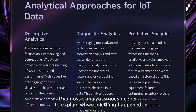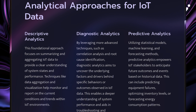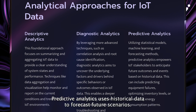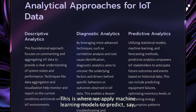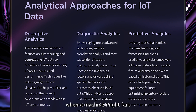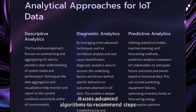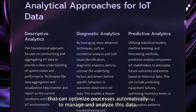Diagnostic analytics goes deeper to explain why something happened. Through techniques like correlation analysis, we identify the root causes of issues. Predictive analytics uses historical data to forecast future scenarios — this is where we apply machine learning models to predict, say, when a machine might fail. Prescriptive analytics suggests actions and automates decisions, using advanced algorithms to recommend steps that can optimize processes automatically.